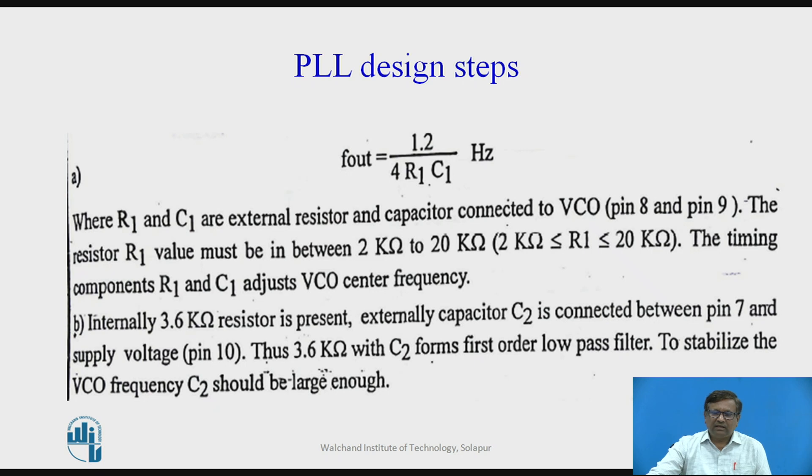The value of C2 must be very large so as to stabilize the VCO frequency. This 3.6 kilo ohm resistor with C2 forms a first order low pass filter. The value of C2 must be large enough to stabilize the VCO frequency. The resistor used is internally present which is fixed at 3.6 kilo ohm.